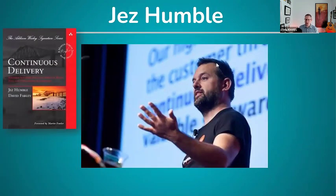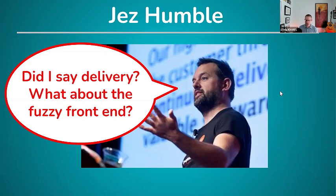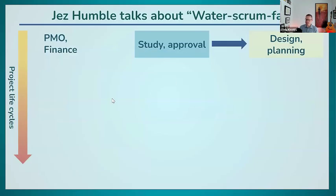Jez Humble literally wrote the book on continuous delivery, but when he started consulting to show IT teams how to implement the types of automation and continuous testing he wrote about, what they actually found was that the things slowing down the flow of work the most was what Jez calls the 'fuzzy front end.' Josh Arnold refers to this as well. Jez gives conference talks describing something he calls 'water-scrum-fall' — this is a diagram showing the sequential flow of work through a feature development system at a broader enterprise level.